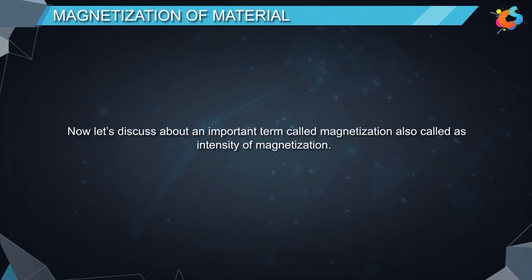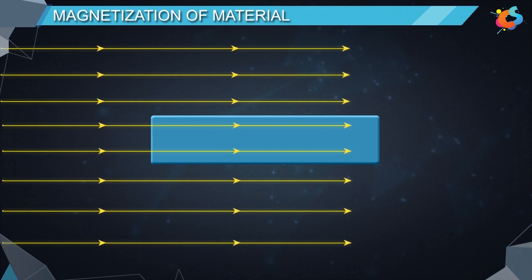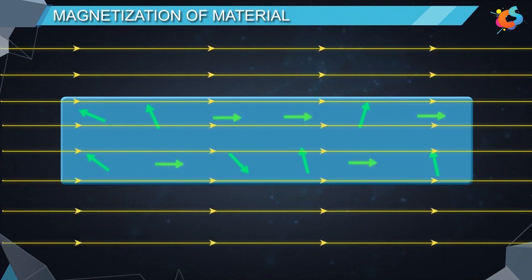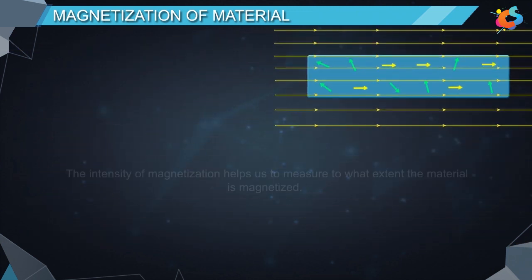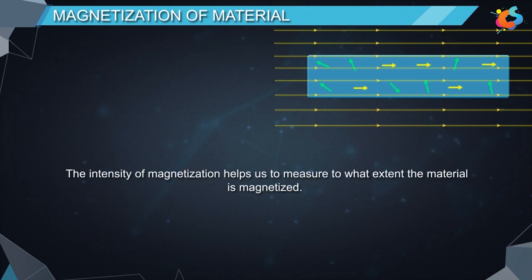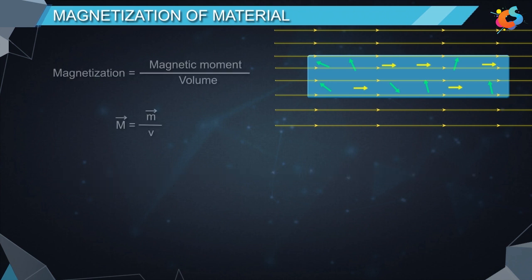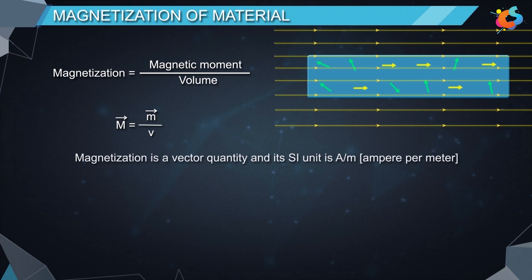Now let's discuss an important term called magnetization, also called intensity of magnetization. When a magnetic material is subject to a magnetizing force, the material becomes magnetized and develops a net magnetic moment. The intensity of magnetization measures to what extent the material is magnetized. It is defined as the magnetic moment developed per unit volume of the material. Magnetization equals magnetic moment divided by volume. It is a vector quantity and its SI unit is ampere per meter.